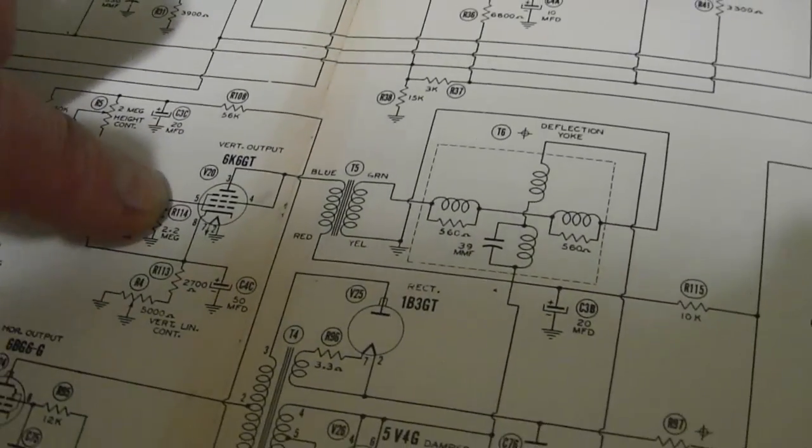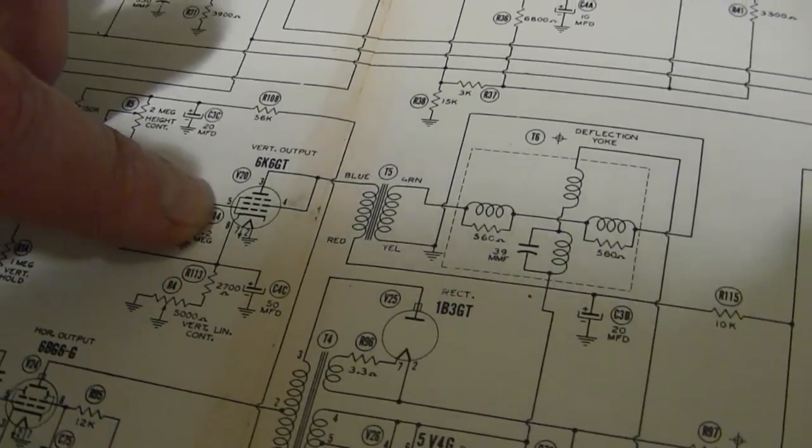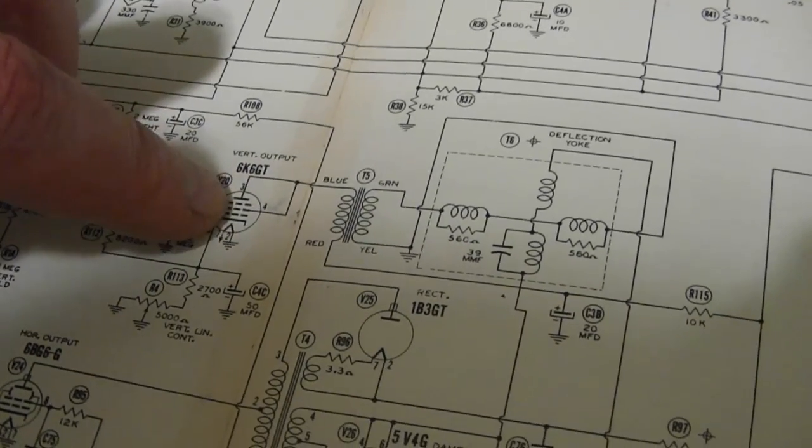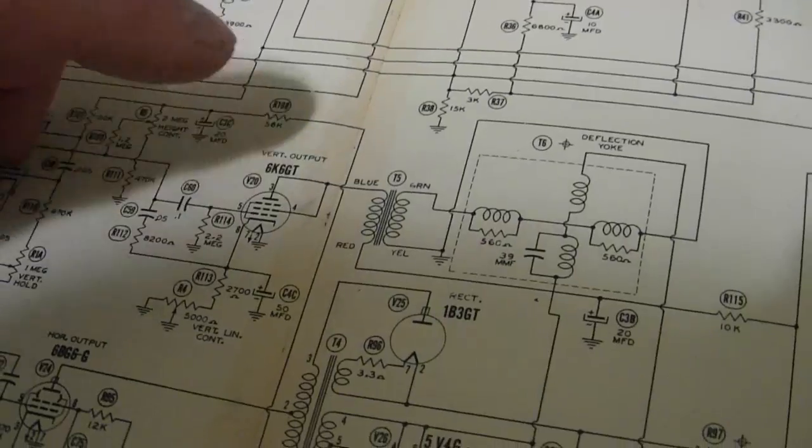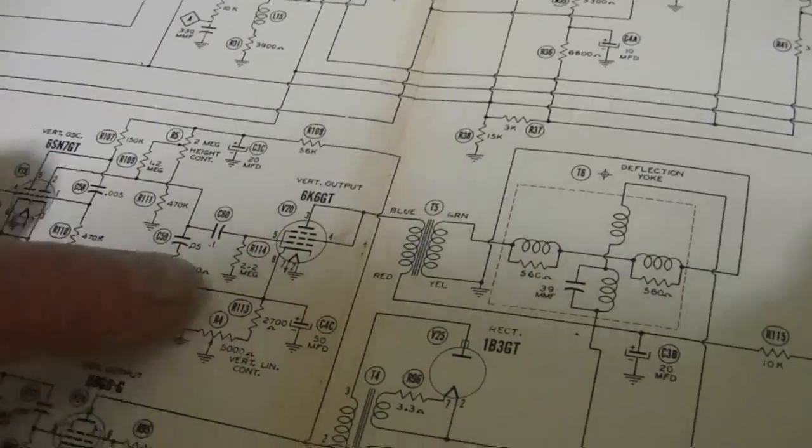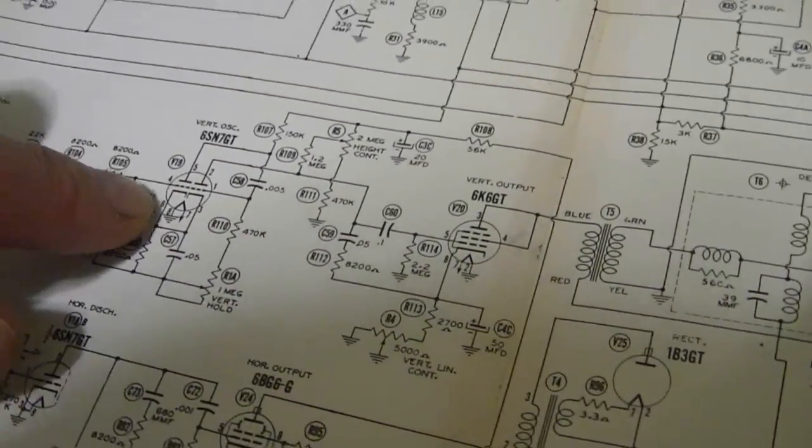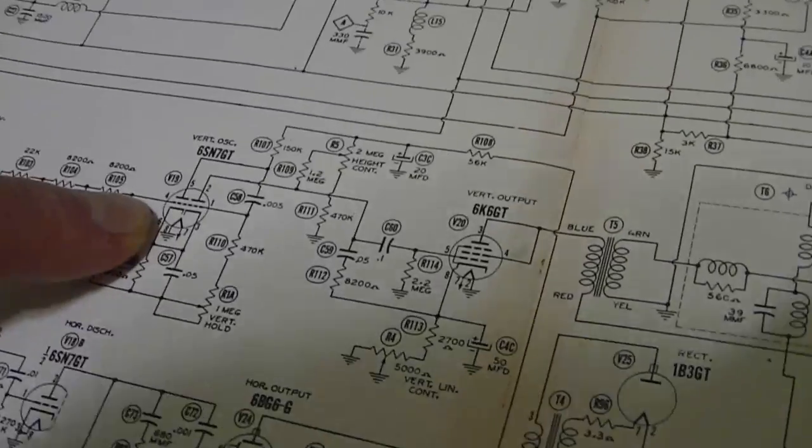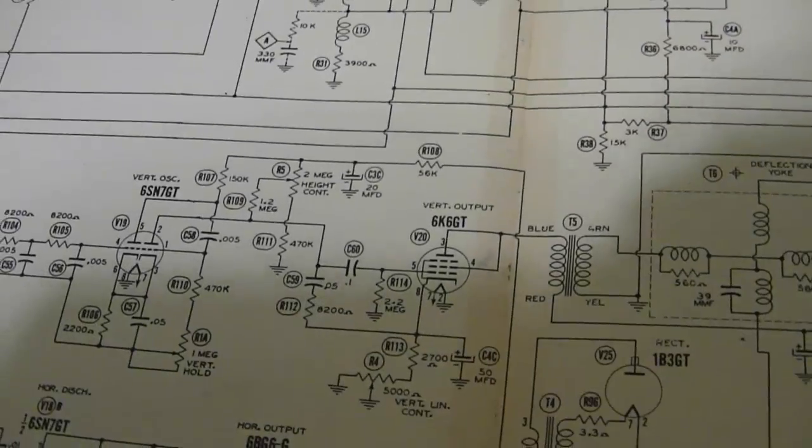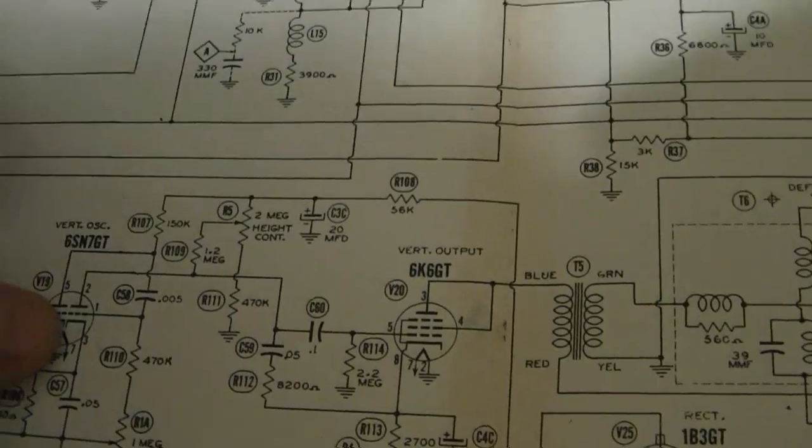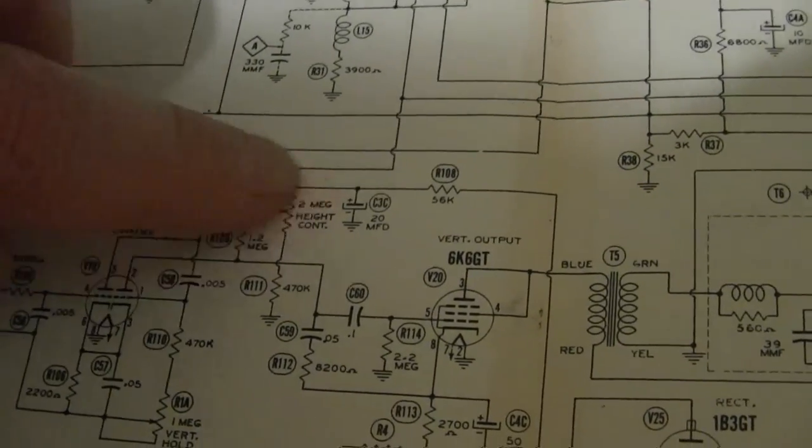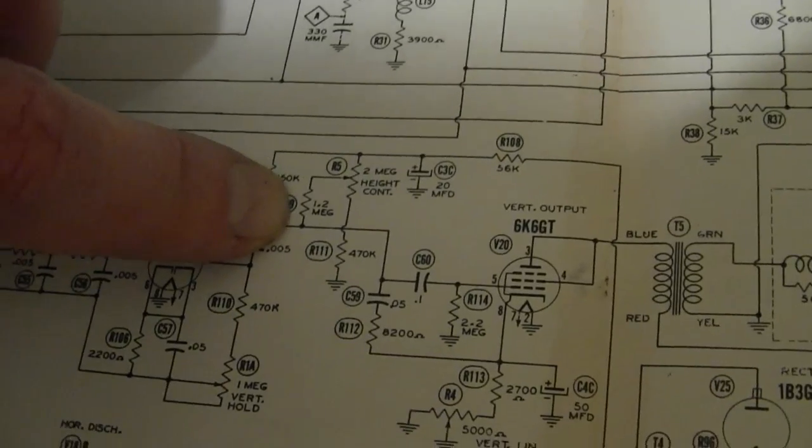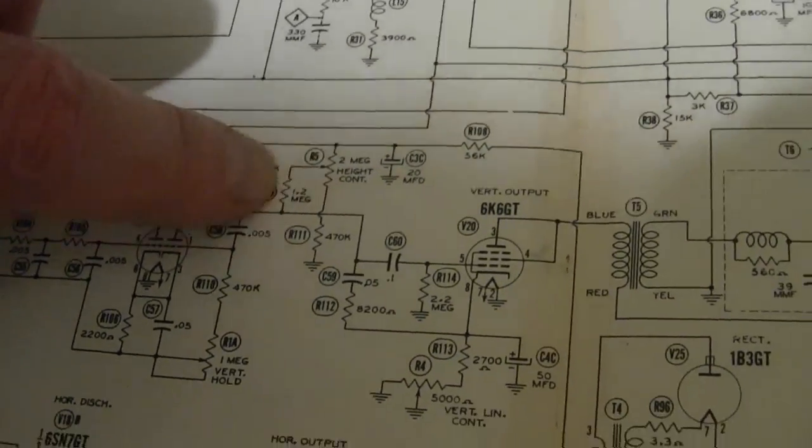What else could be the issue? Well, this tube could be off a little bit. It might be drawing more current than it should be. The biasing might be off on it. I'm going to work back a little bit and maybe check the voltages on this tube. I should also probably check the obvious, which is the height control. Make sure that pot's alright, including this 1.2 meg on that control.